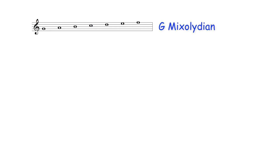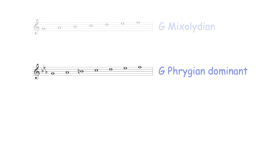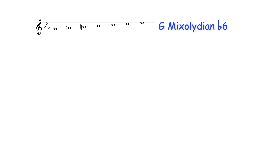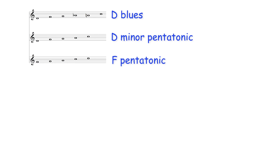The scalic or modal options for improvising over a G dominant seventh chord therefore include the G Mixolydian mode — the fifth mode of the C major scale — the G Phrygian dominant mode — the fifth mode of the C harmonic minor scale — the G Lydian b7 mode — the fourth mode of the D melodic minor scale — and the following blues and pentatonic scales.